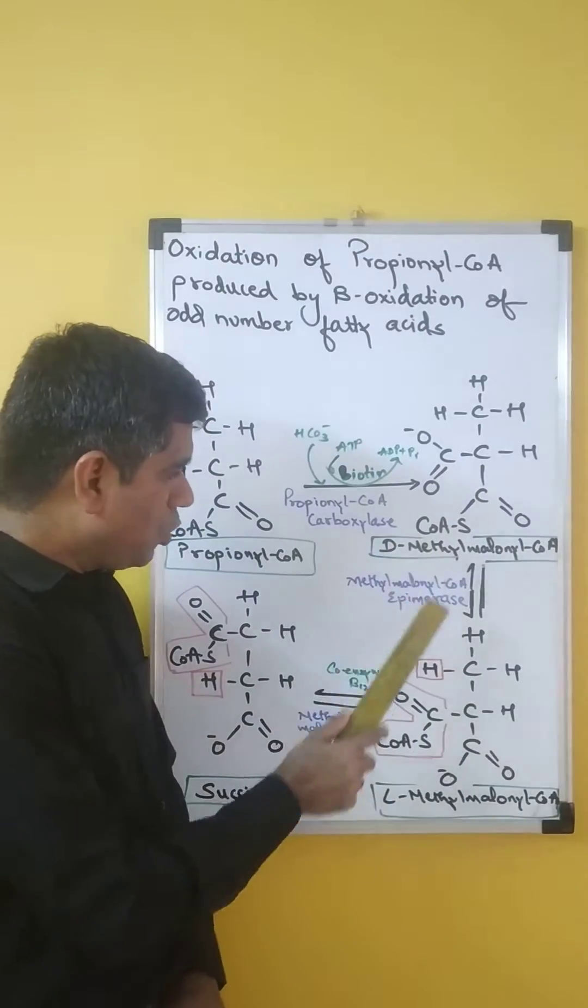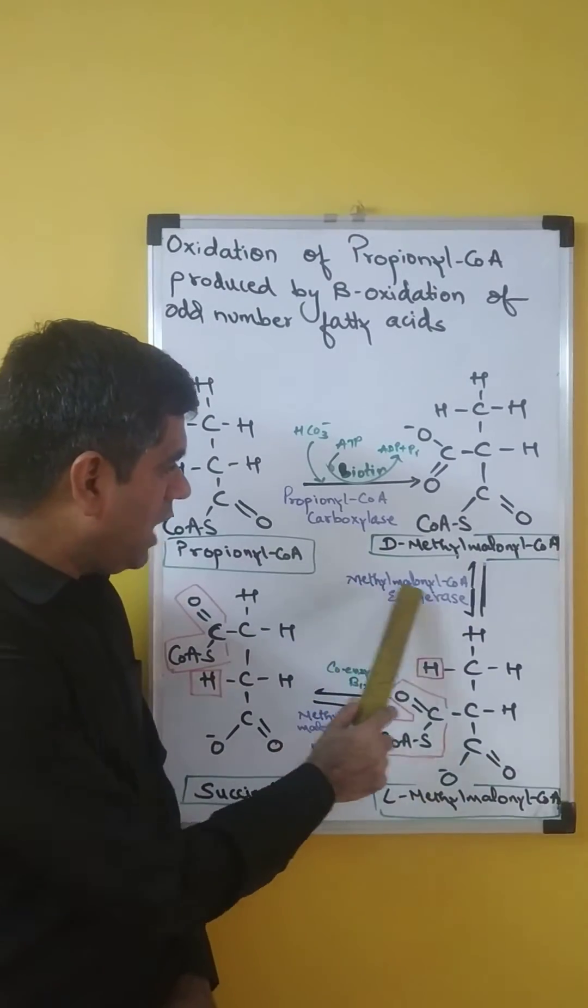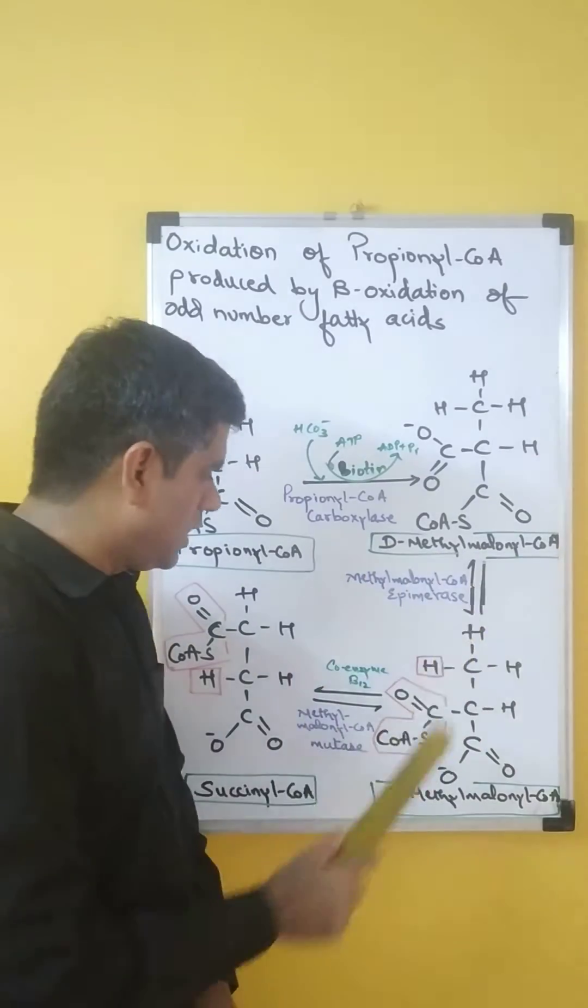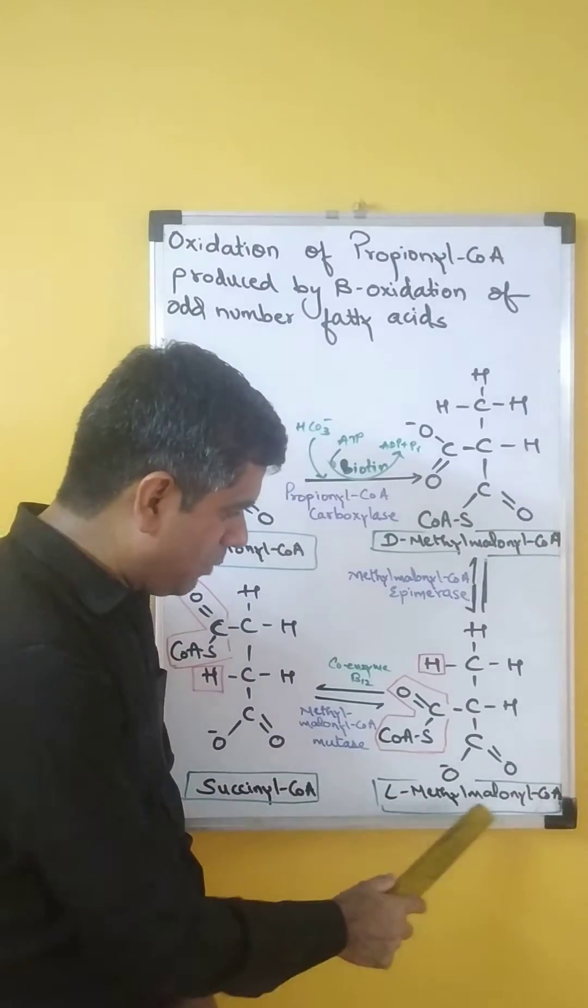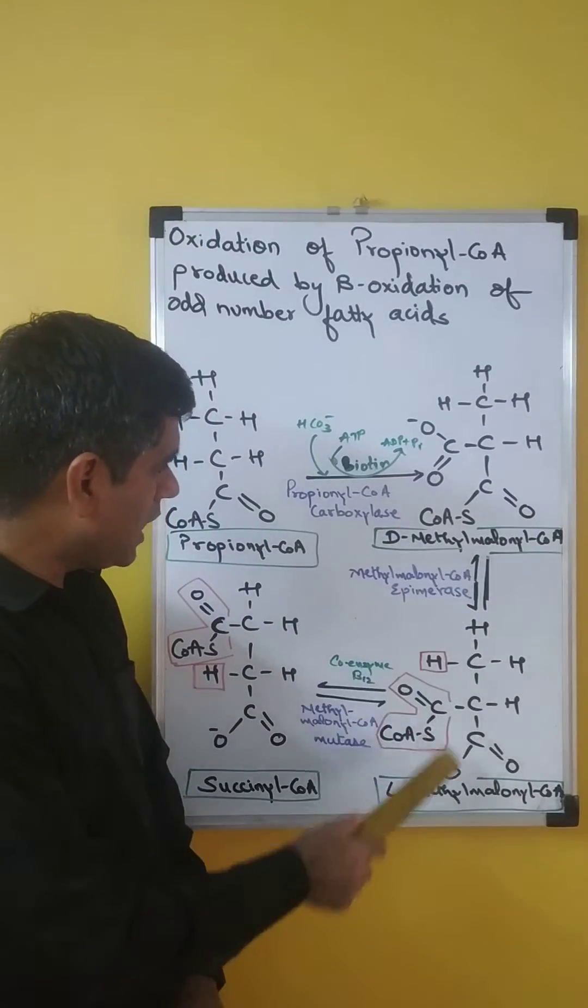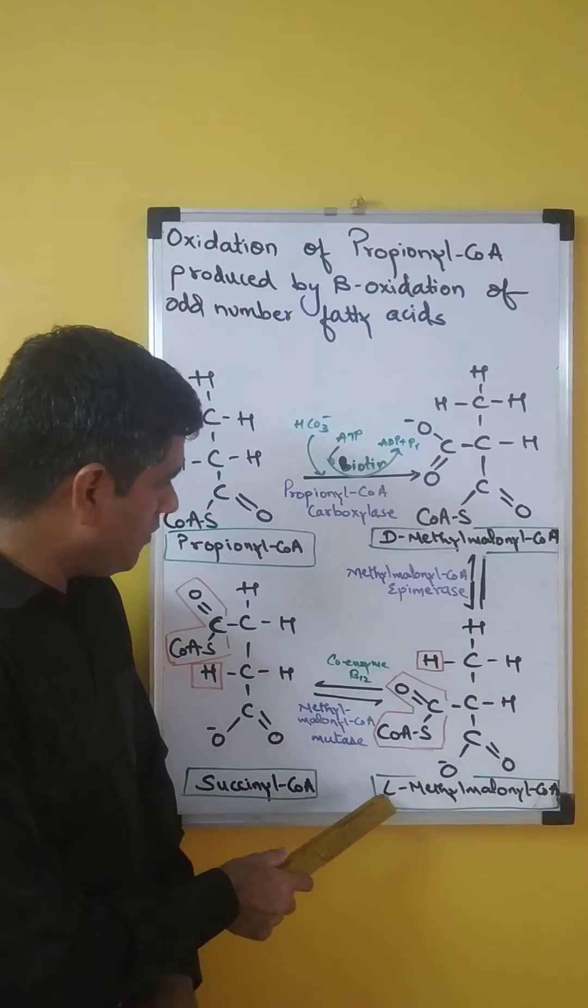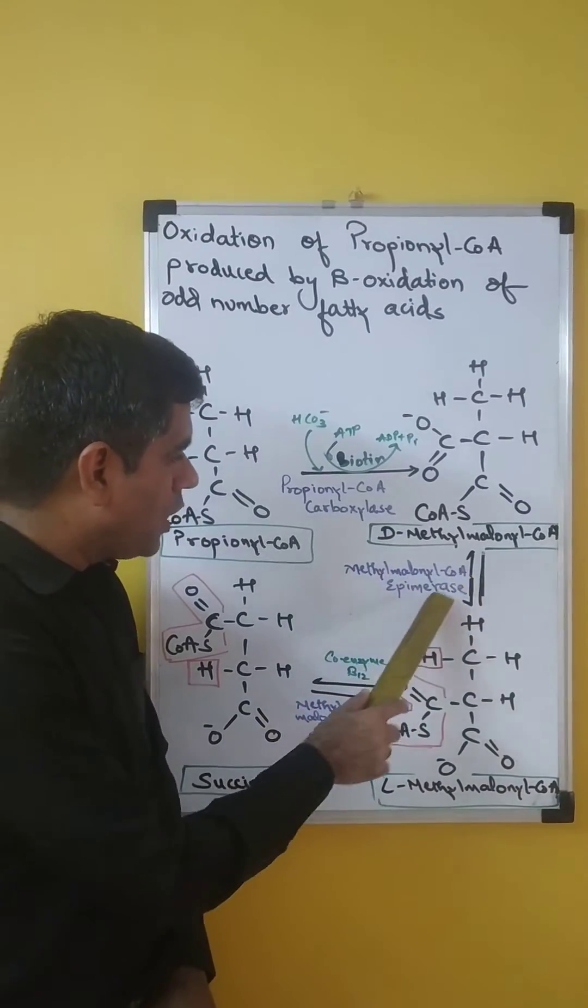This then undergoes epimerization by methylmalonyl-CoA epimerase. The D-stereoisomer is converted to L-methylmalonyl-CoA. Epimerization of the D form to the L form by methylmalonyl-CoA epimerase.